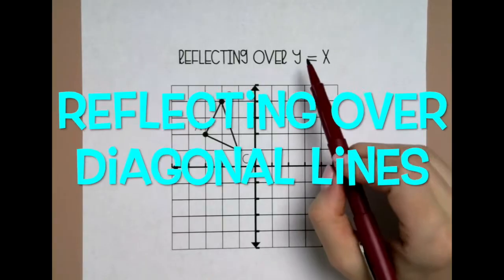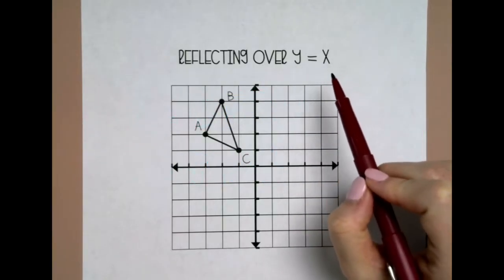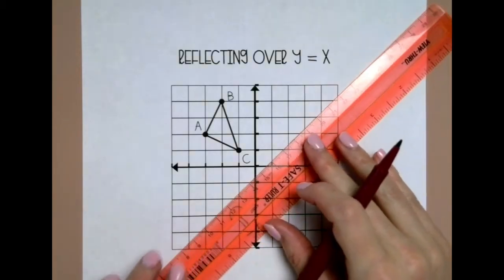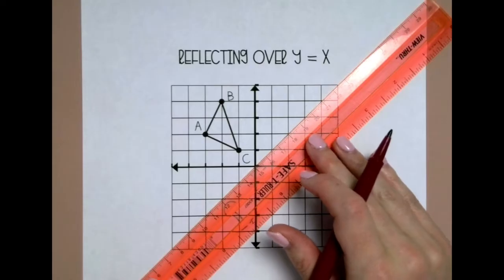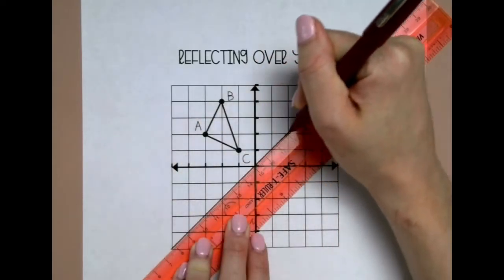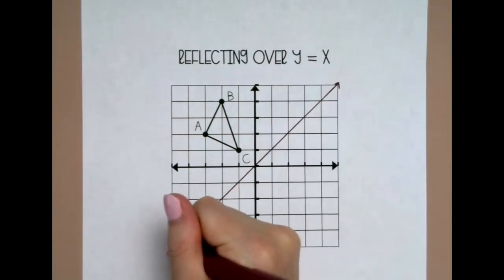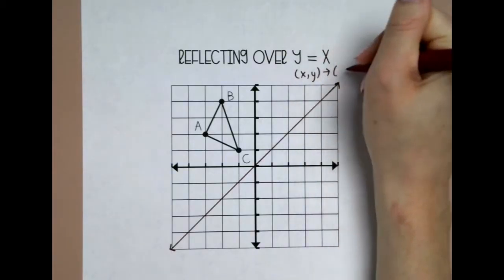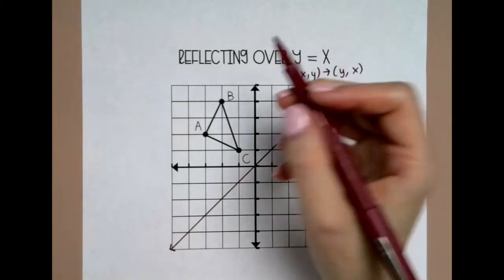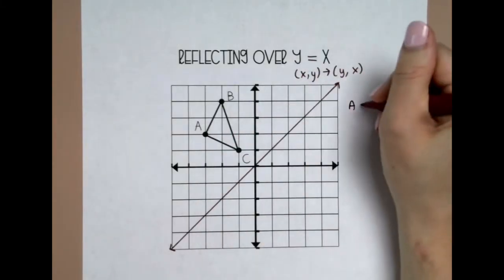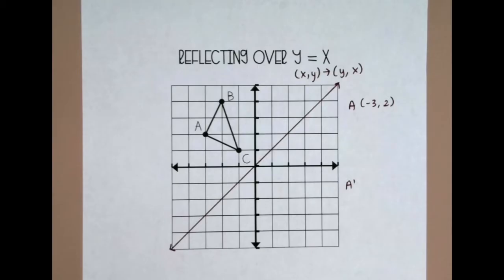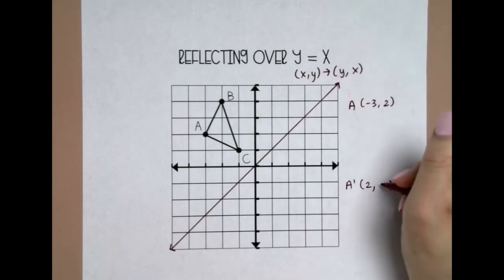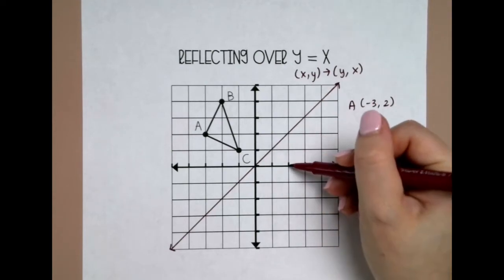When you reflect over diagonal lines, such as the line y equals x, these can be a little confusing to count, but I'm going to show you both ways - you can count or you can use the coordinate rule. The first thing I want to do is draw my line of reflection. Y equals x is the diagonal line that goes through the origin 0, 0. Make sure your line is really straight, otherwise your reflection will be off. The coordinate rule for y equals x is pretty easy to remember: it's y, x. So I'm going to use A - A is at negative 3, 2. So A prime: I write my y value first, leave it the same sign, then I write my x value next, leave it the same sign. So basically you just switch x and y, so positive 2, negative 3.